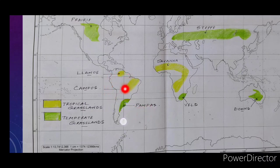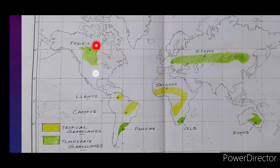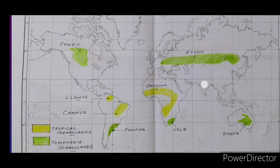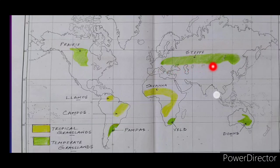Prairie is a temperate grassland in North America. It is famous for extensive wheat cultivation. In Europe and Asia, the temperate grassland is called the Steppe, extending mainly through Asia and some parts of Europe.